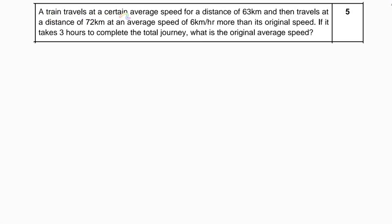A train travels at a certain average speed for a distance of 63 km and then travels a distance of 72 km at an average speed of 6 km per hour more than its original speed. If it takes 3 hours to complete the total journey, what is the original average speed?